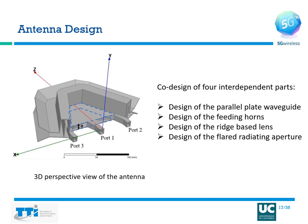Let us delve into the design process of the antenna. The 3D perspective view shows the 3 ports where horns are excited, the parallel plate waveguide with separation A between the plates, the ridge-based lens, and the flared horn radiating aperture. This entire design can be considered a co-design of four interdependent parts: the parallel plate waveguide, the feeding horns, the ridge-based lens, and the flared radiating aperture. It is recommended to start with the paraplate waveguide and then proceed towards the design of the other parts.